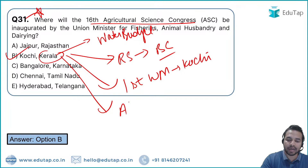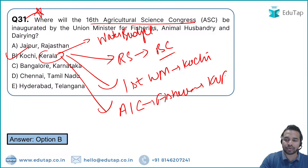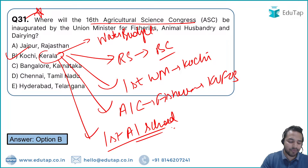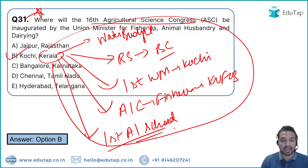Kerala is the first state to get the Atal Innovation Center for Fisheries at KUFOS, and also the first state to have India's first AI School. These Kerala-specific facts are important for the exam.